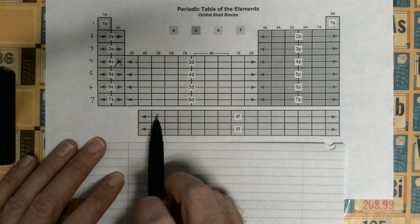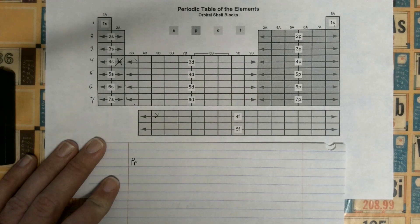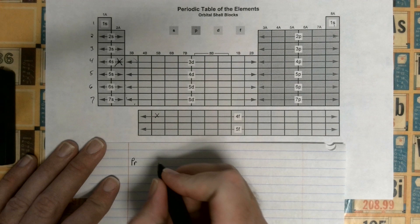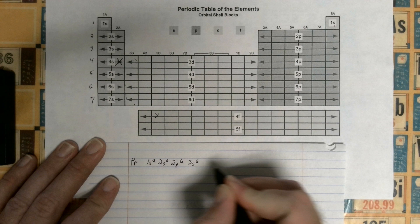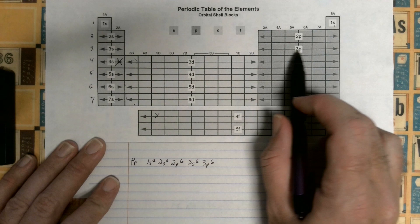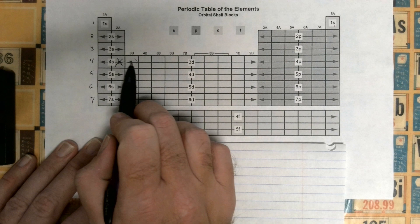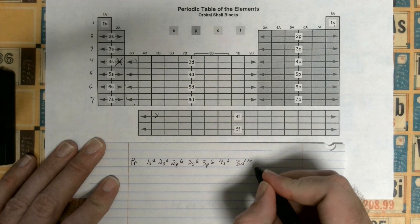This is Pr. We always start back here with 1s, so we're going to go 1s2, and then 2s2 2p6. This is what we did yesterday. 3s2 3p6, that takes us here. 4s2 and we're going to d, and that's one less, so 3d10, then back to 4p, so 4p6.